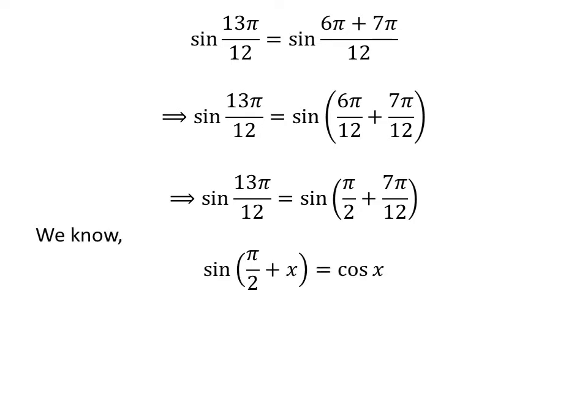We know the trigonometry identity sine of pi upon 2 plus x is equal to cosine of x. The proof of this trigonometry identity is explained in the video appearing in the upper right corner of this video. The link of the video is also given in the description section. Application of the above identity gives us sine of 13 times pi upon 12 is equal to cosine of 7 times pi upon 12.